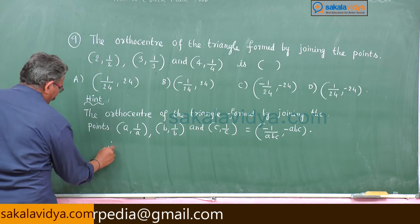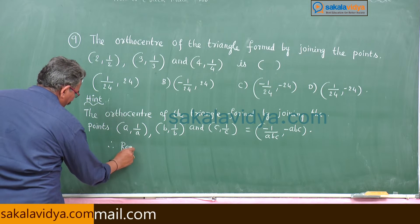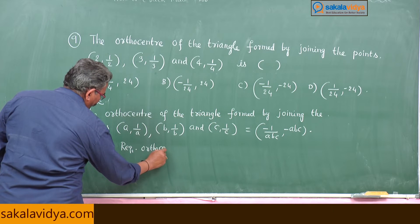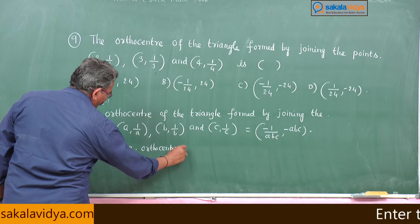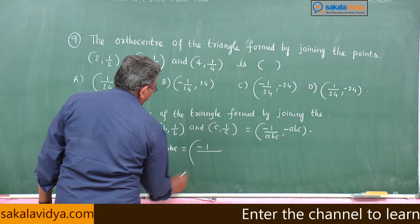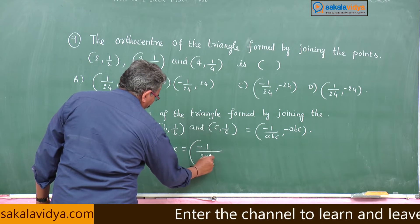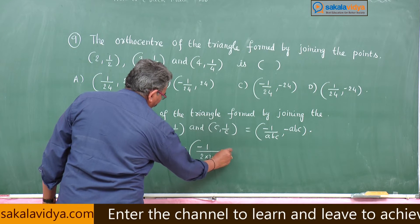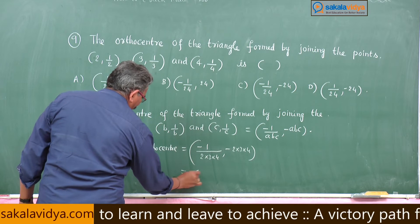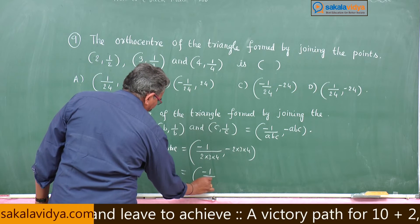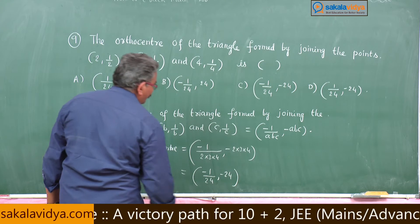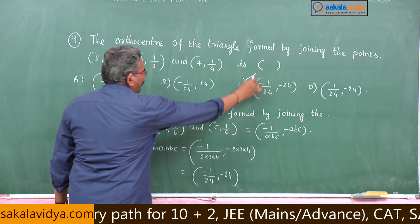Therefore, the required orthocenter is equal to minus 1 by 2 into 3 into 4, minus 2 into 3 into 4. So minus 1 by 24 comma minus 24. C will be the right option.